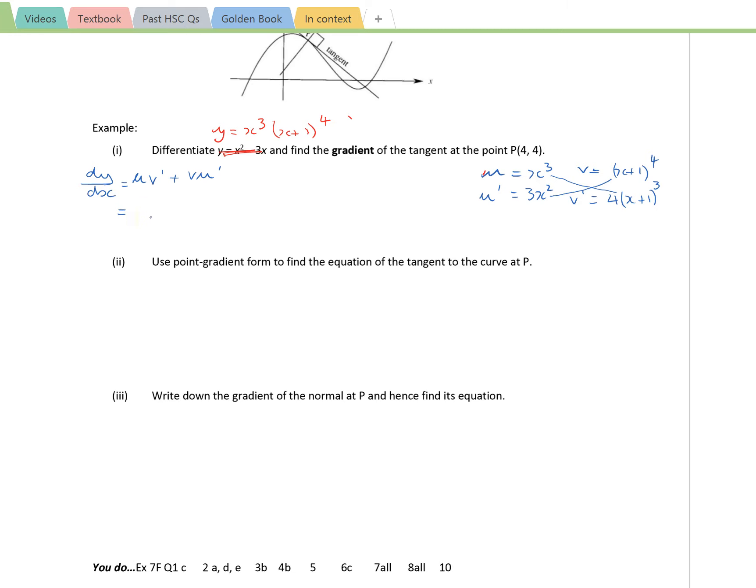And u v dash is x cubed times, so we need a 4 in there, x plus 1 to the 4, because v is x plus 1 to the power 4 times 3x squared. We almost always have a common factor. So we could take out x squared and we could take out x plus 1 to the power 3.